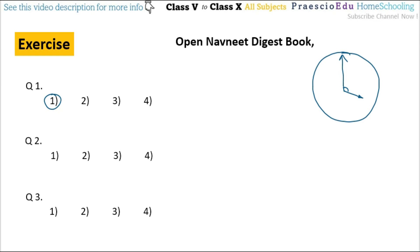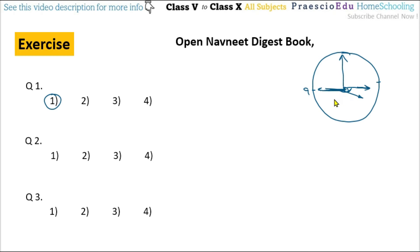Question number 2: which type of angle is formed between the hands of a clock at 3 hours and 45 minutes? 45 minutes means the minute hand is on 9. At 3 o'clock, the hour hand is slightly past 3. The angle formed is more than 90 degrees, so this is an obtuse angle. This is given in option number 3.